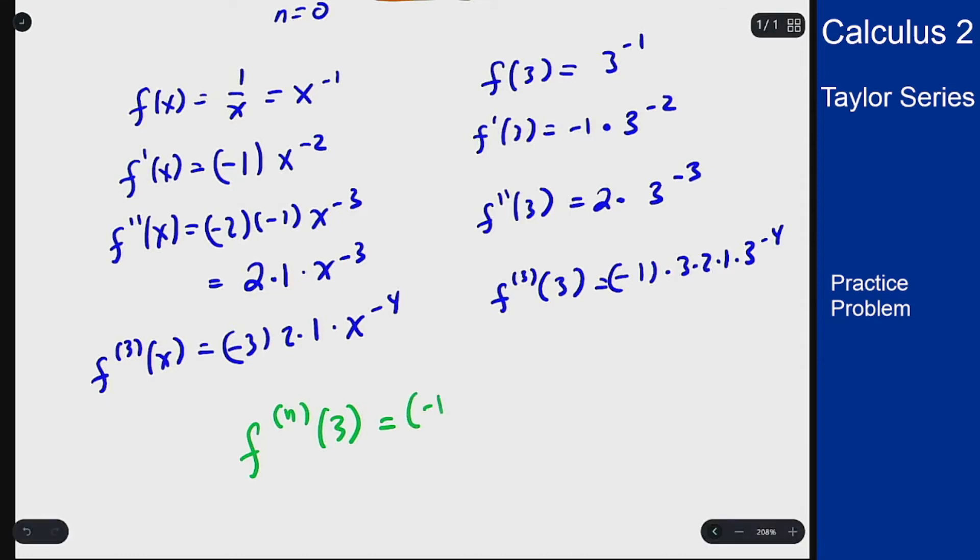So we'll see here a negative 1 to the n because when I plug in n equals 0 I get no negative sign so I get the positive version and for n equals 1 the first derivative I'm going to get a negative sign and that pattern continues.